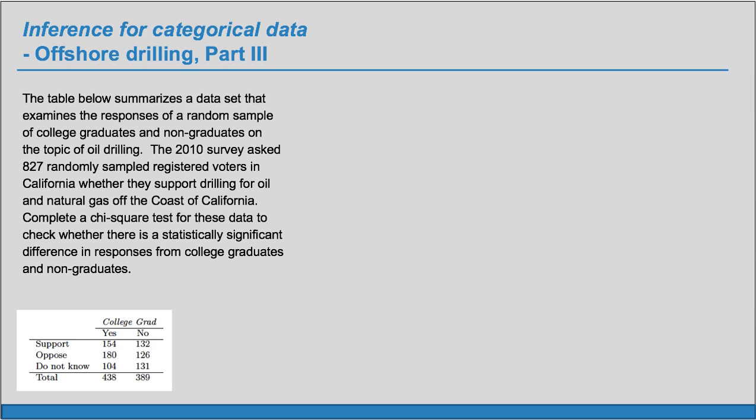The 2010 survey asked 827 randomly sampled registered voters in California whether they support drilling for oil and natural gas off the coast of California. Complete a chi-square test for these data to check whether there is a statistically significant difference in responses from college graduates and non-college graduates.